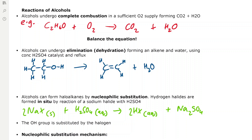When balancing combustion equations, focus on the carbons first, then the hydrogens, then the oxygens. Put two in front of CO₂ so we have two carbons on each side. For the hydrogens, we have six on the left so we need three in front of the water to get six on the right. That leaves the oxygens — four in CO₂ and three in water is seven. On the left we currently have three, so don't forget the oxygen in the alcohol molecule. To get to seven we need a three in front of the oxygen on the left, giving us six plus the one in the alcohol — that's seven.